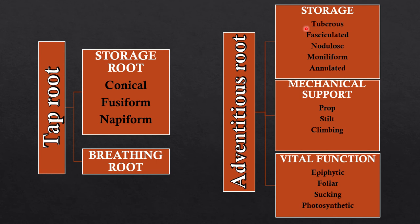In storage roots you will see tuberous roots, fasciculated roots, nodulose, moniliform, and annulated roots. In mechanical support we will be talking about prop roots, stilt roots, and climbing roots. Under vital function we will be talking about epiphytic, foliar, sucking, and photosynthetic roots. Photosynthetic roots are also known as assimilatory roots.